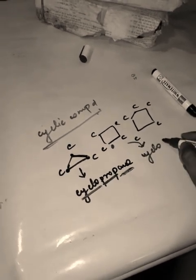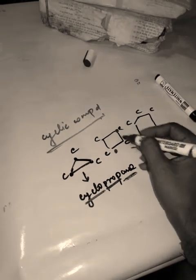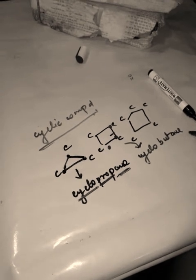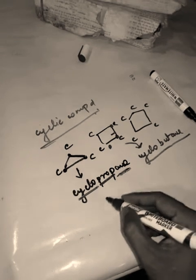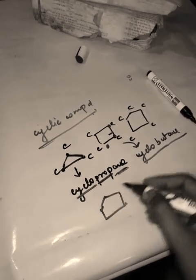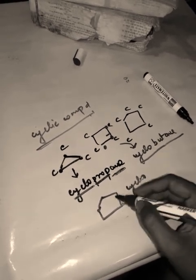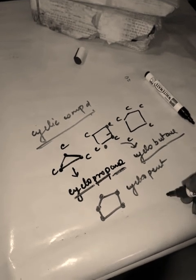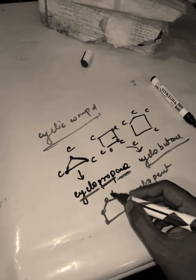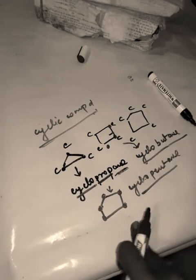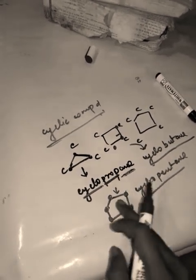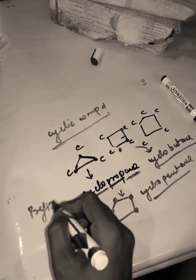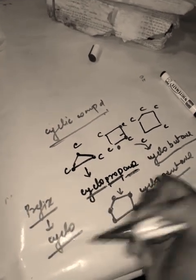For a five-carbon cyclic ring: one, two, three, four, five carbons, all single bonds — cyclo + pent + ane = cyclopentane. So the formula for cyclic compounds is the same as before but with 'cyclo' added as a prefix before the word root. The complete formula: cyclo + word root + suffix.